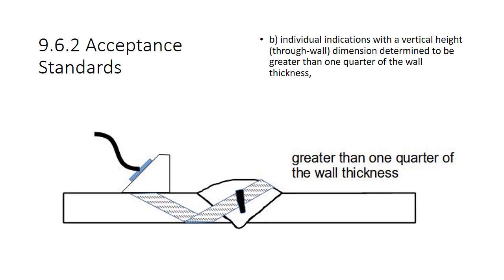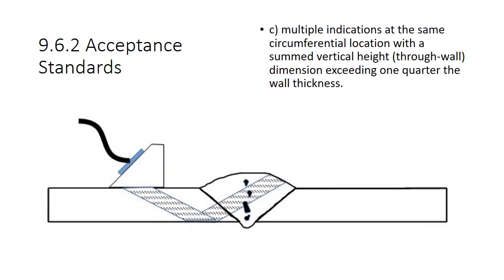B. Individual indications with a vertical height through-wall dimension determined to be greater than one quarter of the wall thickness. So anything greater than one quarter of the wall thickness is considered a defect. C. Multiple indications at the same circumferential location with a summed vertical height through-wall dimension exceeding one quarter of the wall thickness. So if you've got a bunch of stuff stacked up in there and it's greater than one quarter of the wall thickness, you've got to deal with it.